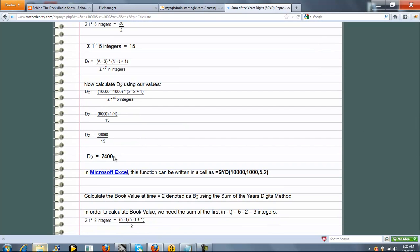We get a depreciation charge at time 2 of 2400. One of the cool things about the calculator is we show you how to get this answer using Excel. And this is the formula.